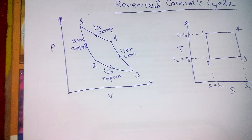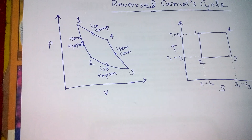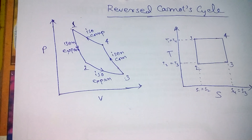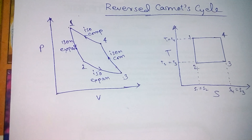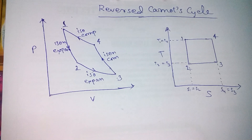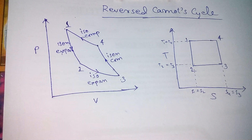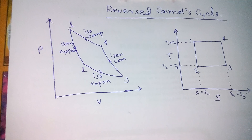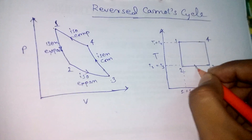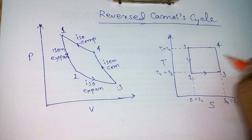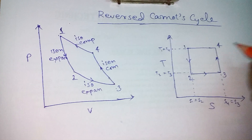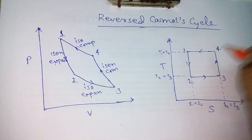Process 3 to 4 is isentropic compression, and process 4 to 1 is isothermal compression. According to the TS diagram, we see that 1 to 2 is a fall in temperature, then 2 to 3 is an increase in entropy, 3 to 4 is an increase in temperature, and 4 to 1 is a decrease in entropy.